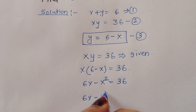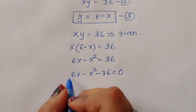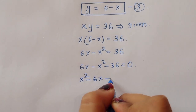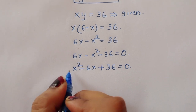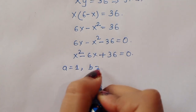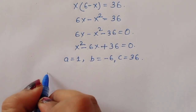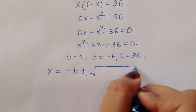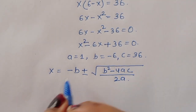We can write: 6x minus x squared minus 36 is equal to 0. Multiplying through by minus 1, we get x squared minus 6x plus 36 is equal to 0. Now the coefficients are: a is equal to 1, b is equal to minus 6, and c is equal to 36.